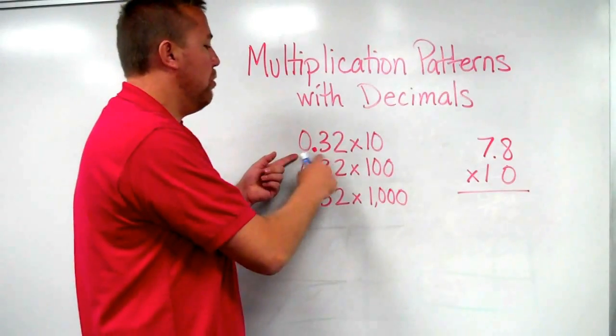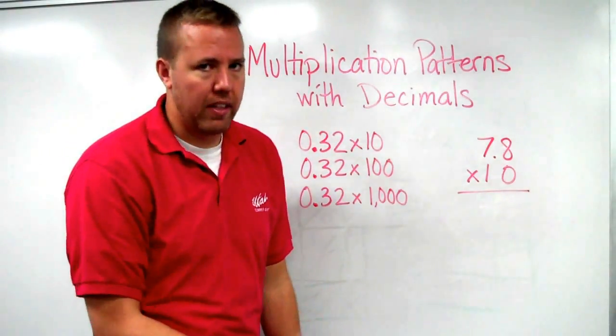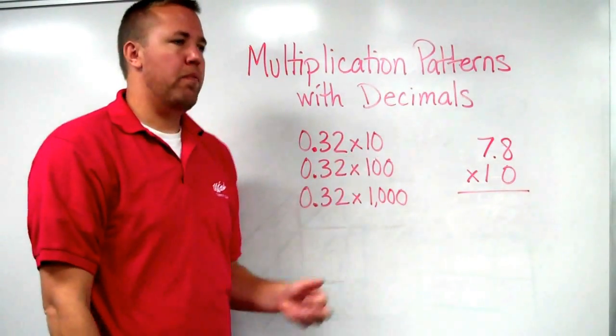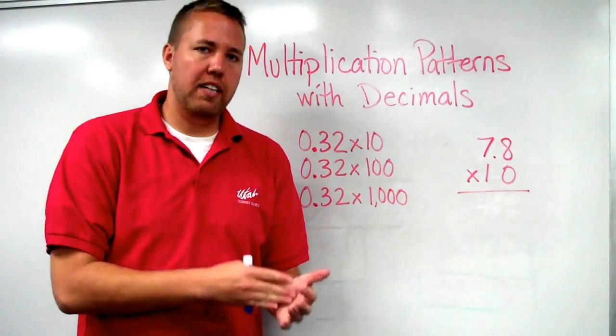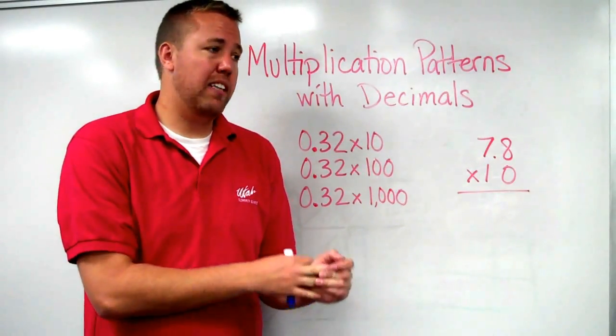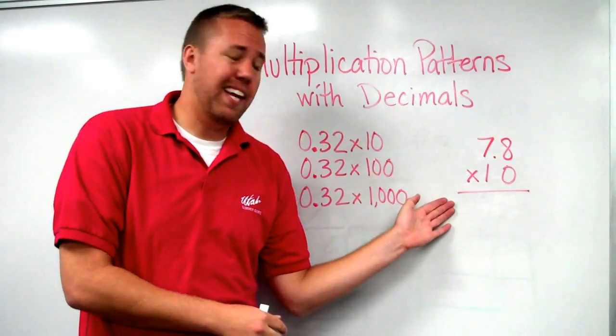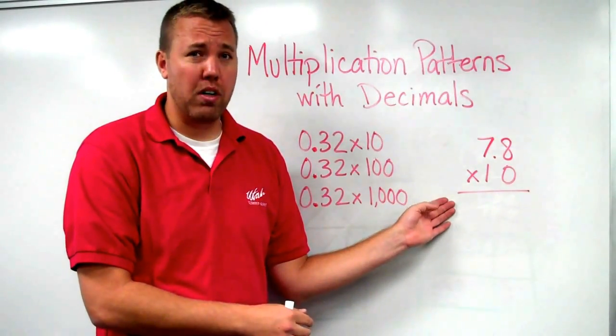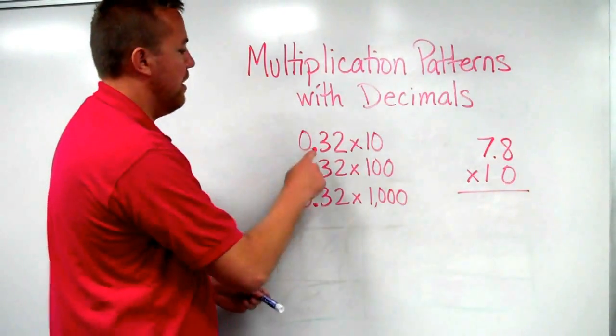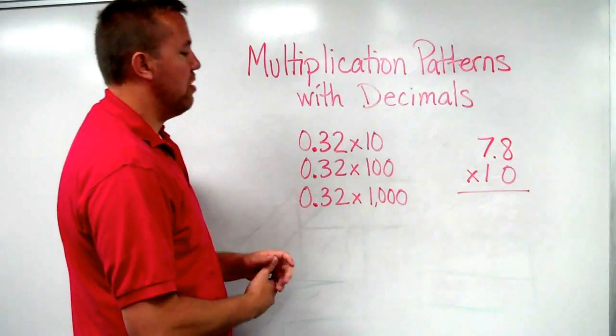So as we look at this, 0.32, or 32 hundredths, times 10, because of the beauty of place value and timesing a number by 10, this is super simple. We actually won't even do it like that, and I'll show you why it doesn't work in just a moment. So we have 0.32 times 10.